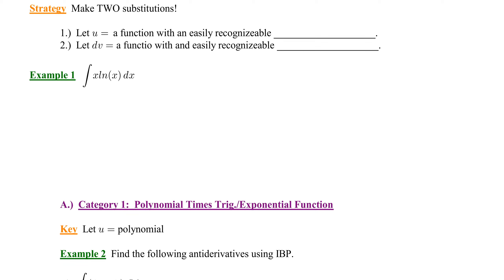We're going to let u equal a function with an easily recognizable derivative. Then dv will be a function with an easily recognizable antiderivative. So choose u to be a function we can differentiate, and choose dv to be a function we can integrate. Remember, this is an alternative approach to a general u-substitution — if we cannot integrate using prior techniques, integration by parts may work.